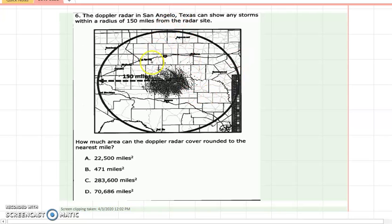Okay, this is still day 7. I'm doing the second hand. It says the Doppler radar in San Angelo, Texas can show any storms within a radius of 190 miles from the radar site. It says how much area can the Doppler radar cover rounded to the nearest mile? So if you see the word radius, then obviously we're going to be talking about a circle. And so we need the formula for the area of a circle.